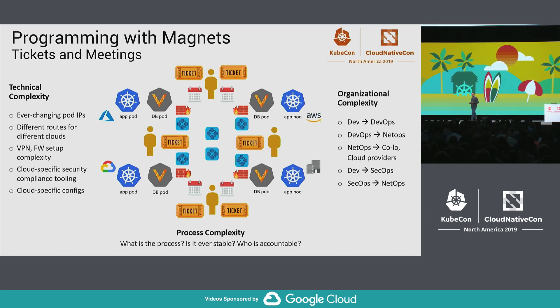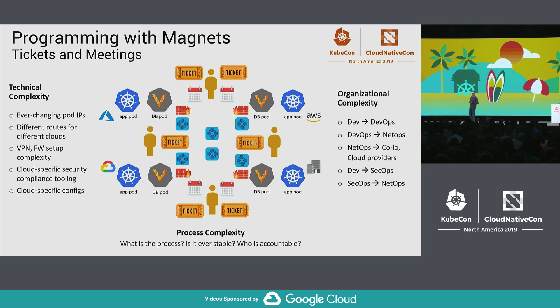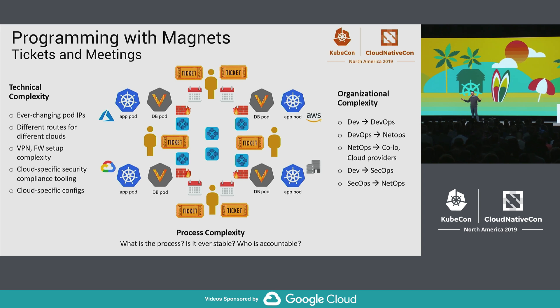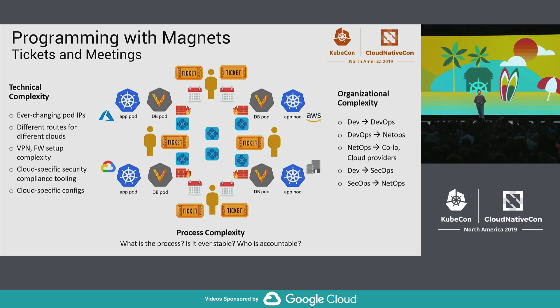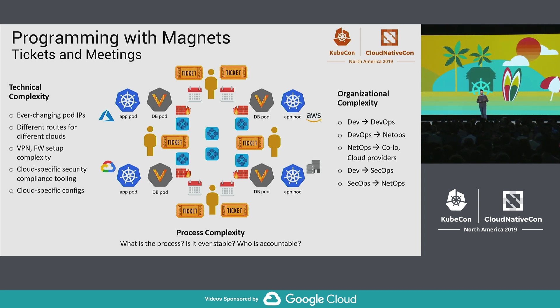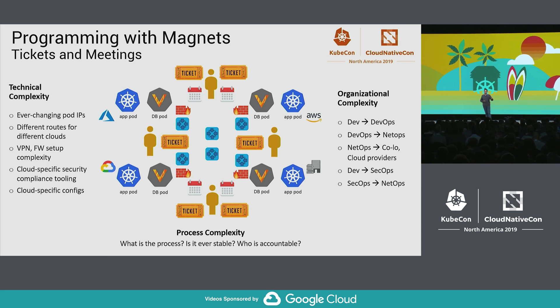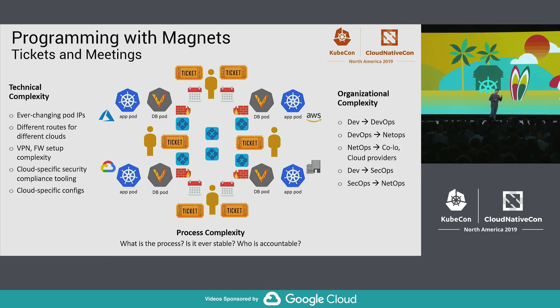Finally, there's process complexity: is there a process? Is it stable? Who is accountable? More meetings, more tickets. A developer's best friend? Not.